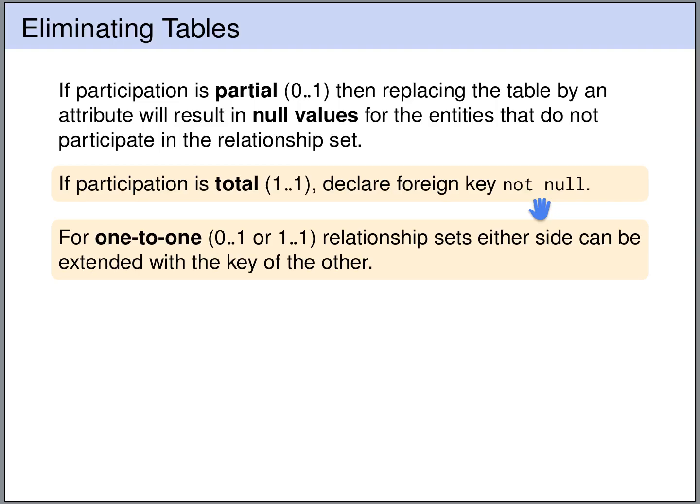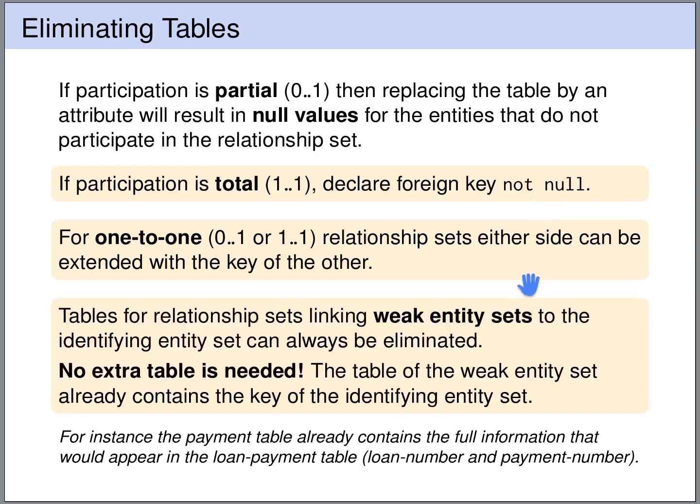If we have a one to one relationship set, then we can extend either side with a foreign key of the other side. And if we have an identifying relationship for a weak entity set, then this identifying relationship can always be eliminated. We actually do not need to do anything, because the table for the weak entity set already includes the primary key of the identifying entity set and the discriminator of the weak entity set. So the table for the weak entity set already contains the entire information that this identifying relationship set would contain.